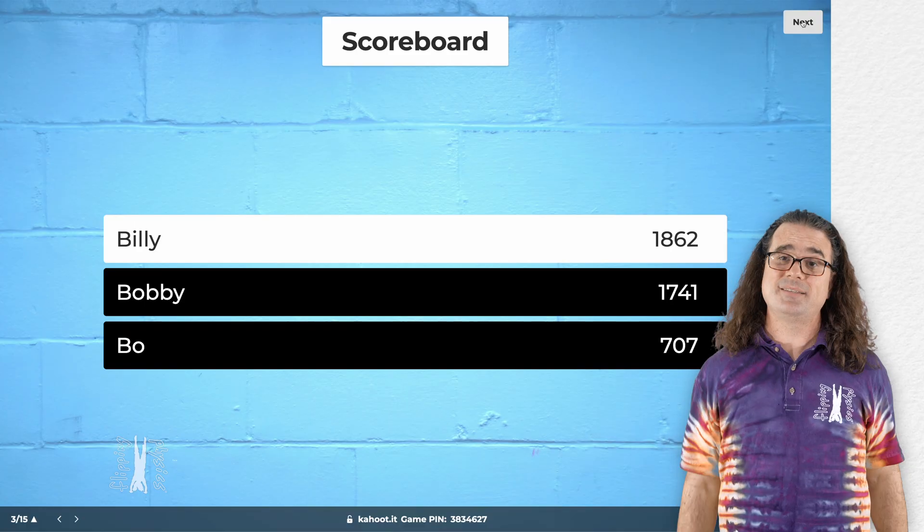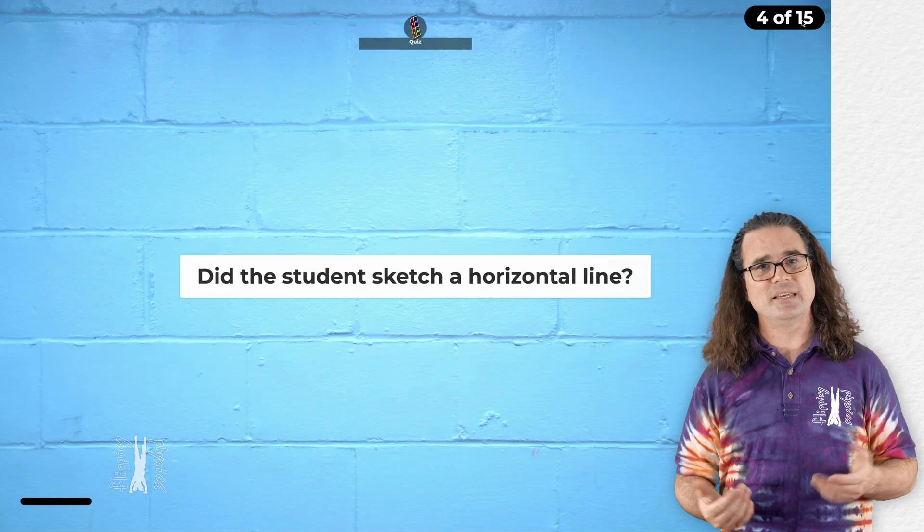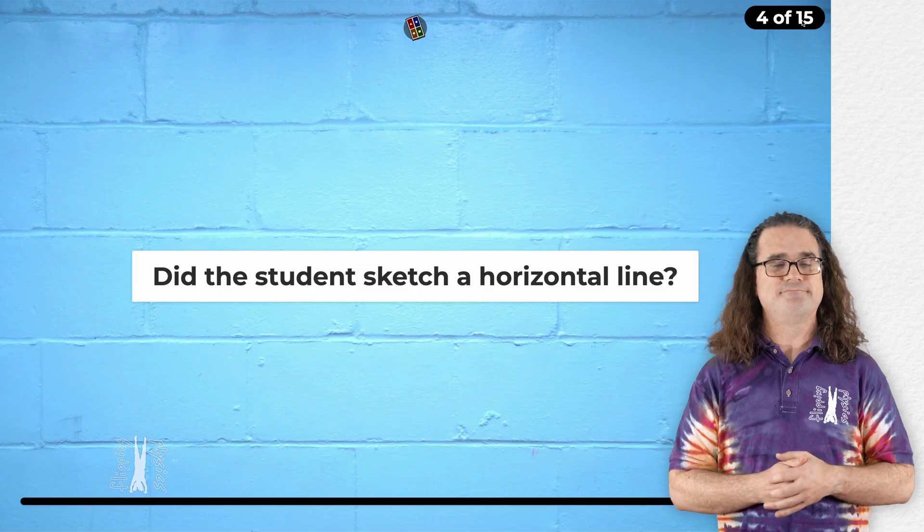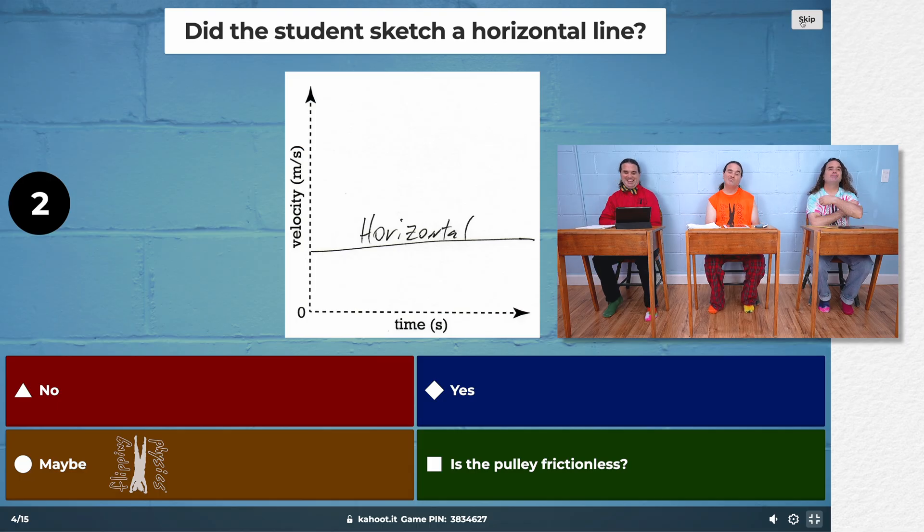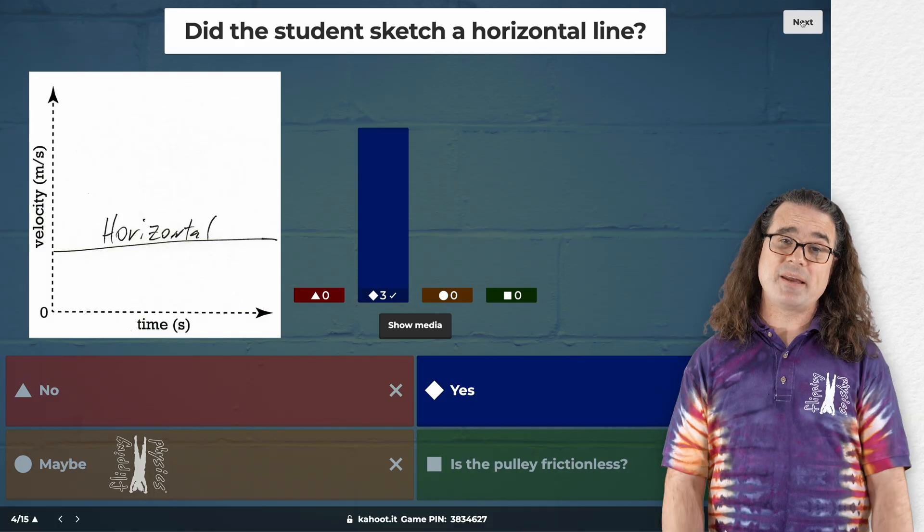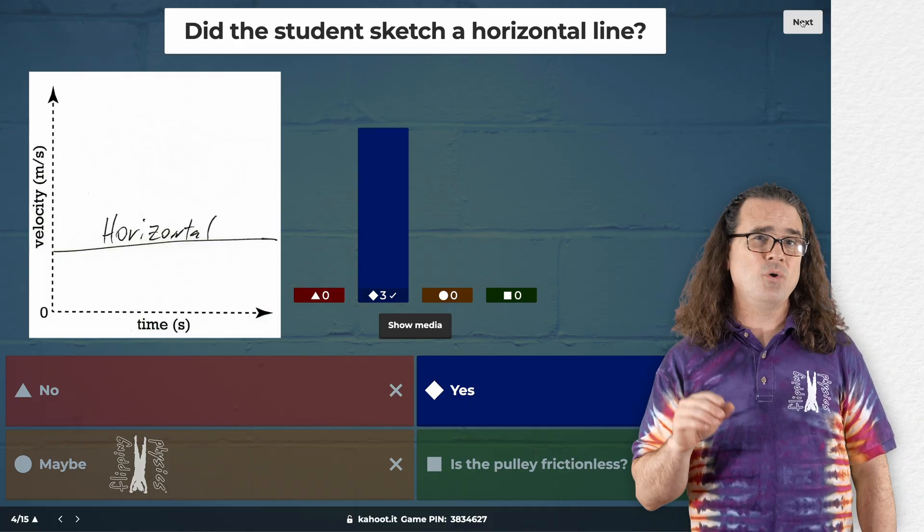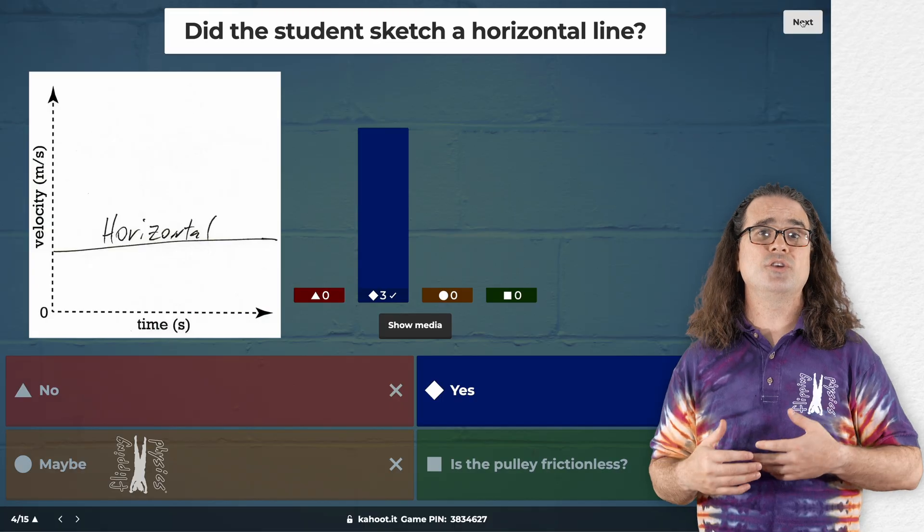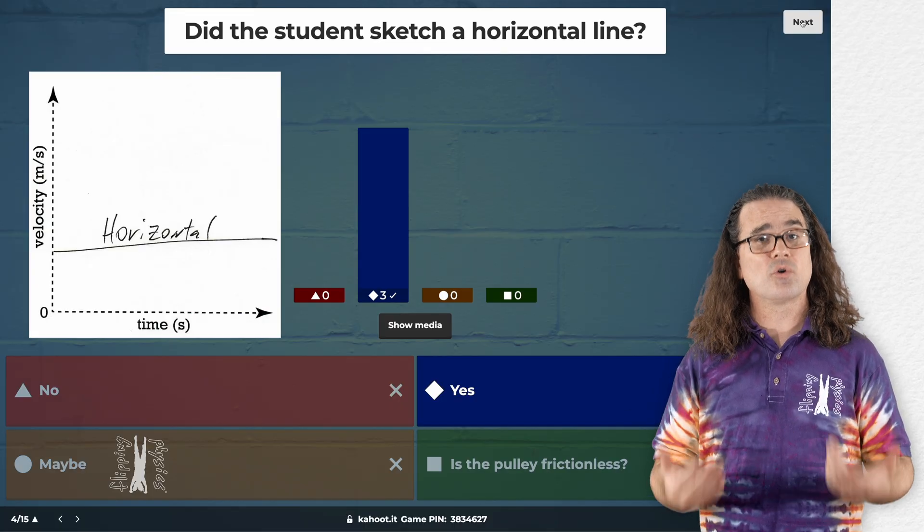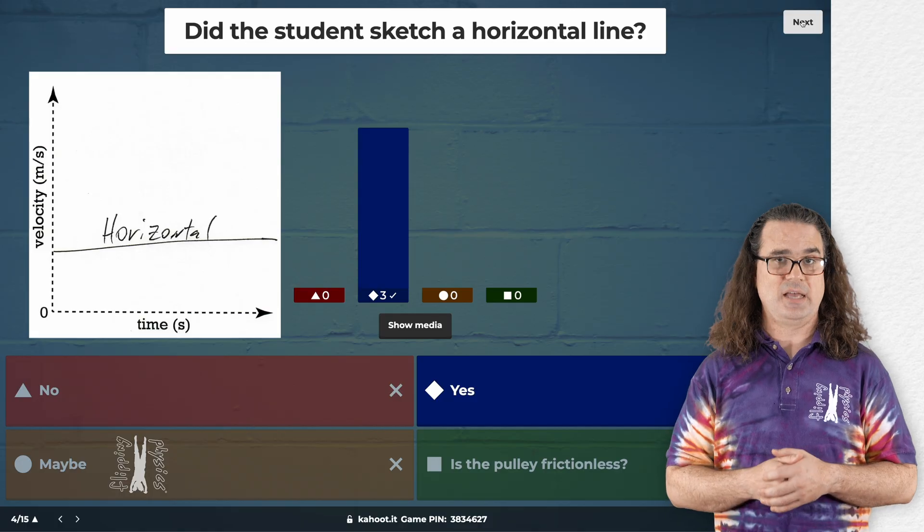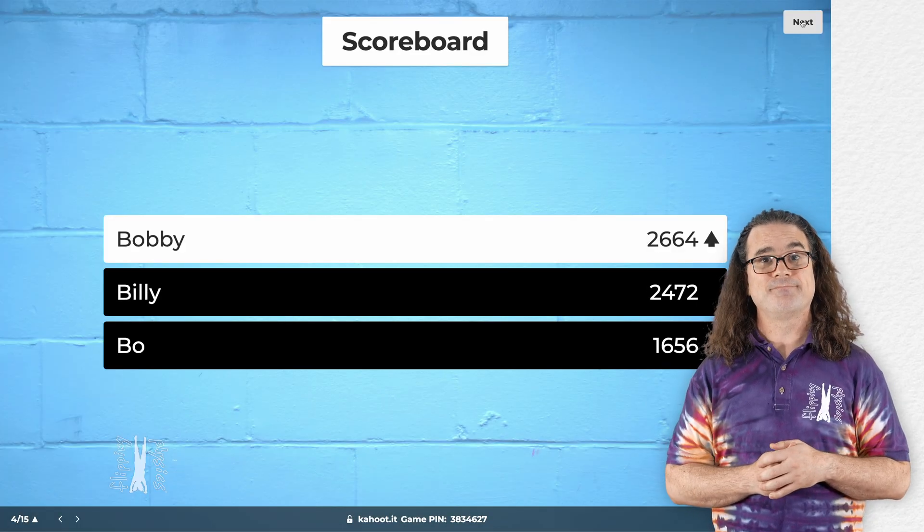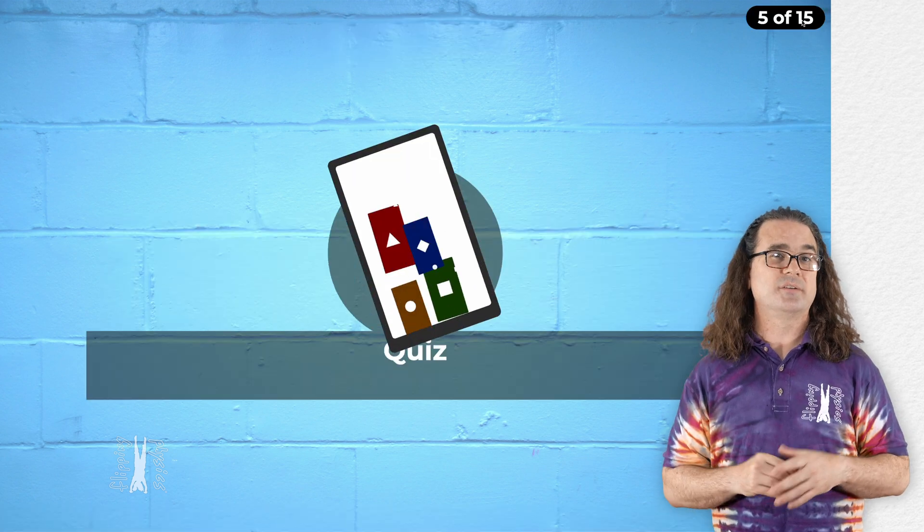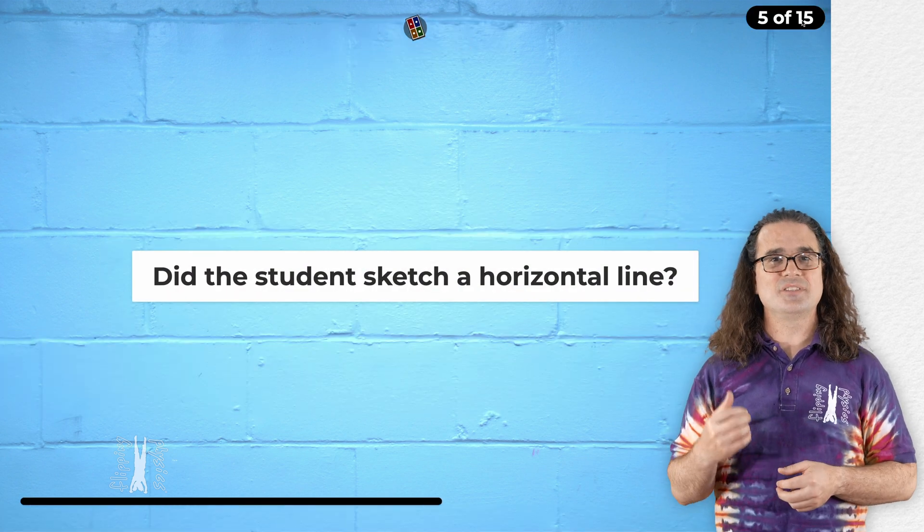And following the basic instructions is required to gain points. Okay. That makes sense, I guess. Yeah. Sure. And Billy is still in the lead. The next question still is, did the student sketch a horizontal line?